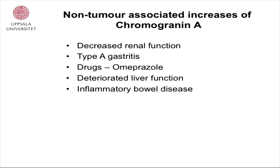A few reasons for non-tumor-associated increases of Chromogranin A: Chromogranin A is a very valuable and sensitive marker. However, it's less specific, especially in patients with decreased renal function, type A gastritis, patients taking proton pump inhibitors such as omeprazole, and patients with inflammatory bowel disease or impaired liver function.